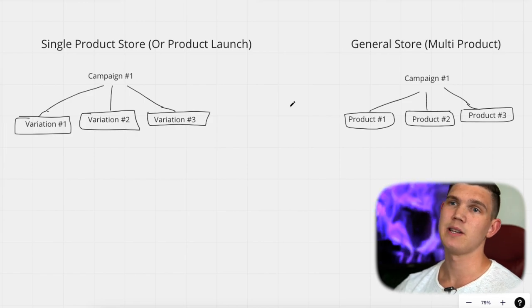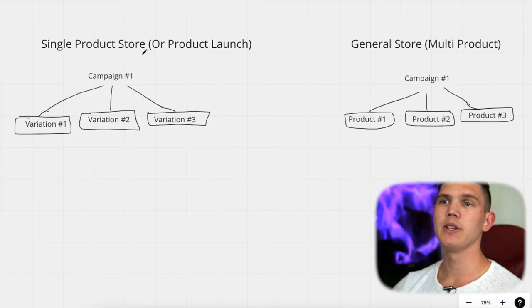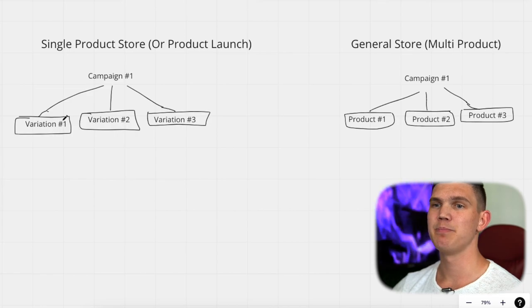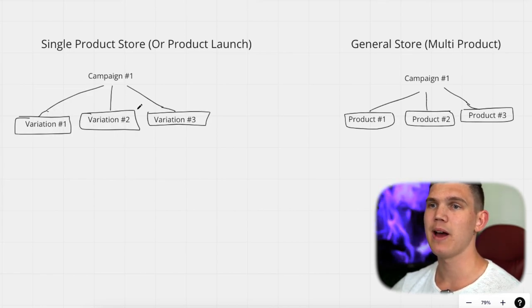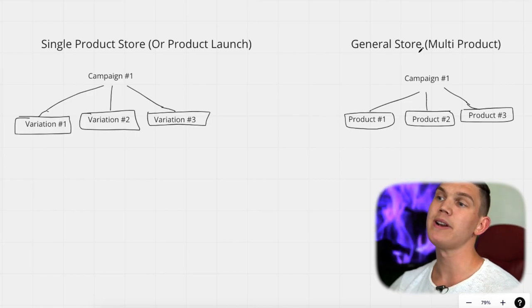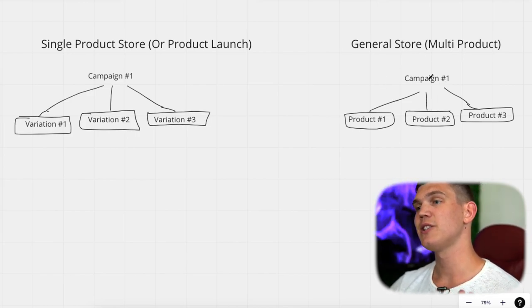We'll be going through the process of elimination with several products within your ad groups. This is going to work great for multi-product stores and general stores with multi-single-product ad groups, but it can also be incredibly effective for ad groups with several different variations of the same product. When running a single product, we're going to separate the ad groups based on variations of that product. You can see we have three different variations, but for a general or multi-product store, you separate them into individual product ad groups.